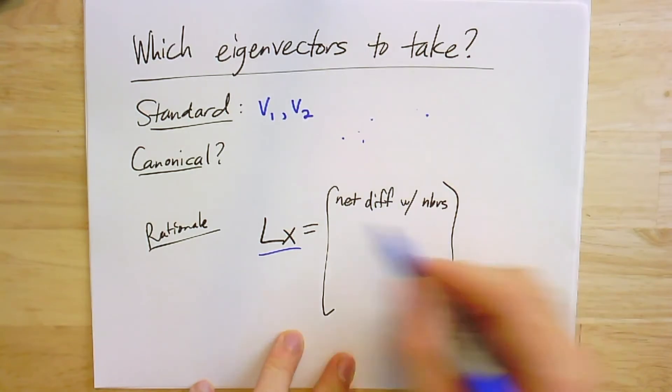Let me pose a couple other questions first. One is, which eigenvectors should you even take? The standard is to take V₁ and V₂—that is, the eigenvectors associated with the two smallest non-zero eigenvalues.